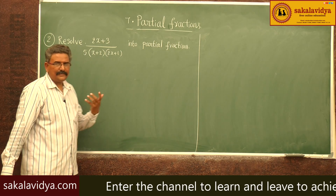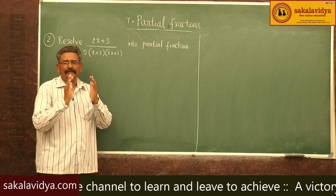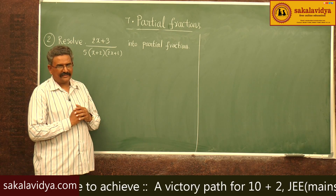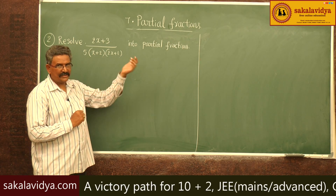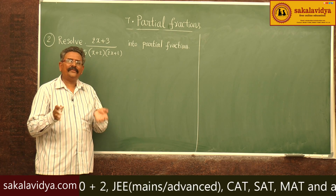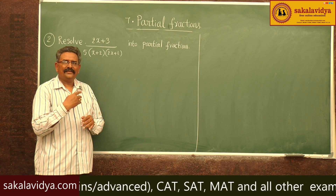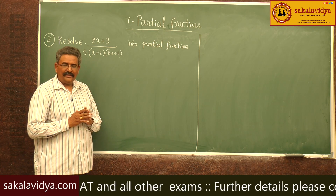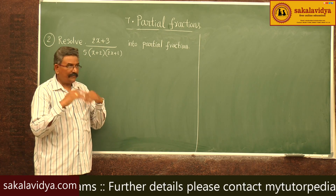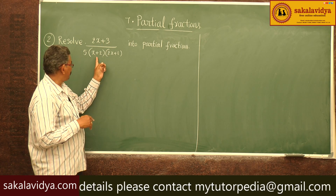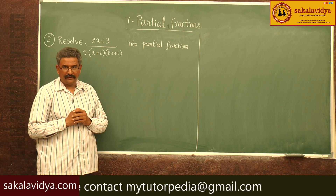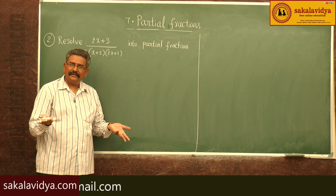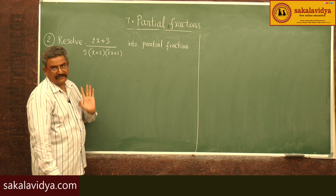Now, generally in this problem everybody will get confused. G of x contains 3 factors: φ, (x+2), and (2x+1). φ is not a linear factor, so you leave it. That means, here it is better to first find the partial fractions of (2x+3) by (x+2) into (2x+1). After that, multiply by 1/φ. That is all — we get the partial fractions of this one.